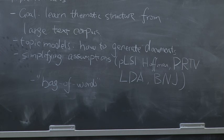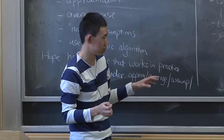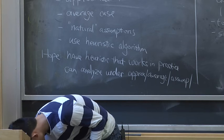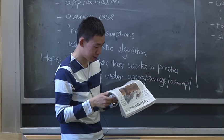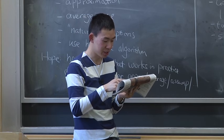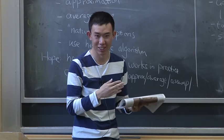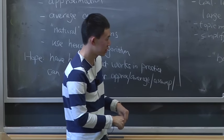The Bag of Words assumption says: in order to learn the semantic structure, we don't really need to care about the ordering of the words. We have an article, we can just forget about the ordering, throw all the words into a bag, and try to learn from that. This is quite reasonable — I'll randomly permute the words of a headline: 'Wids, Preparations, Deal, Hotels, Rice, Ebola.' Even though I've permuted all the words, you can tell what the article is about.